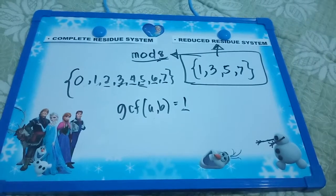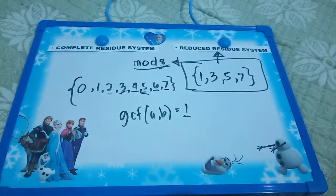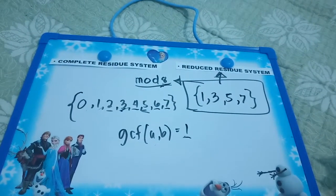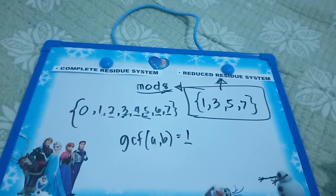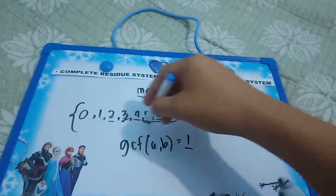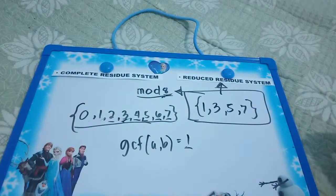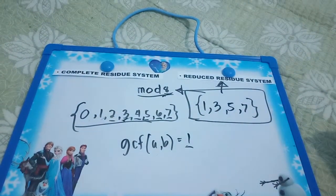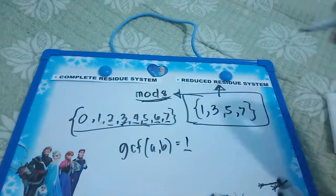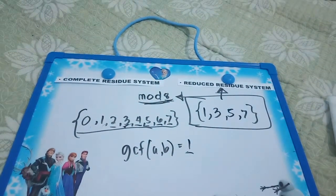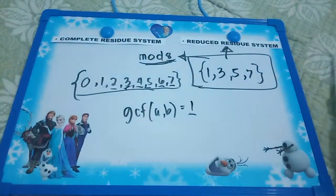Again, what is a reduced residual system? A reduced residual system is a subset of our complete residual system that are relatively prime and lesser than our mod m. Let's take another example.